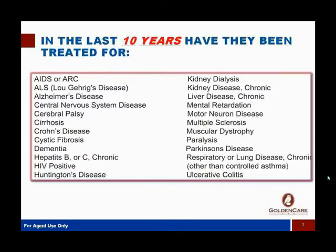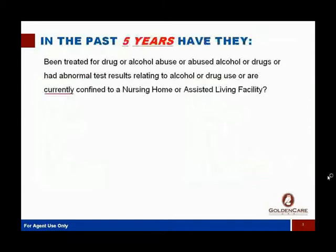Sticking with the bird's eye view, this is taken right from the application I'll show you later. If you're sitting across the table from someone uninsurable or declined for traditional long-term care insurance, you can ask yourself three questions. First: in the last 10 years, have they been treated for any of the major conditions on screen? Those are the big ones, so we're not going to knock too many people out with just this one. The next question is: in the past five years, have they had drug or alcohol problems, or are they currently confined in a nursing home or assisted living?